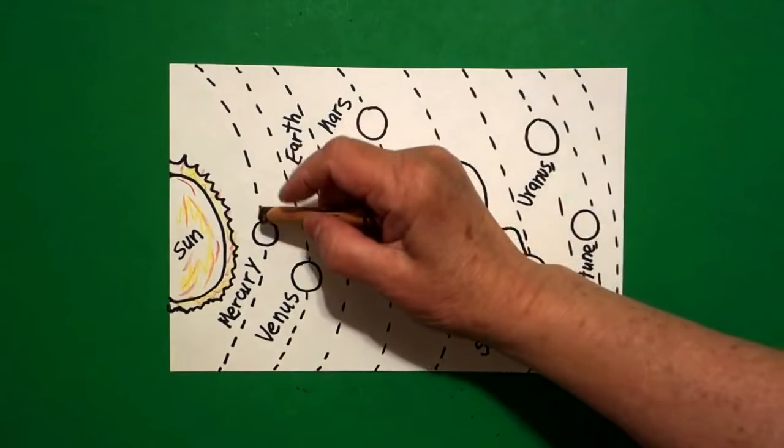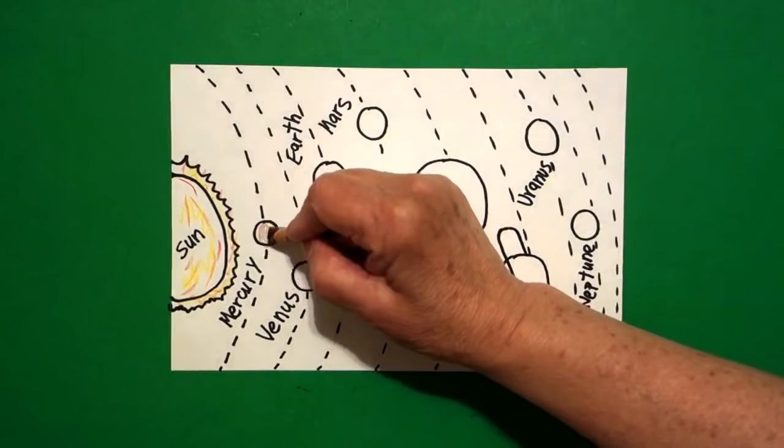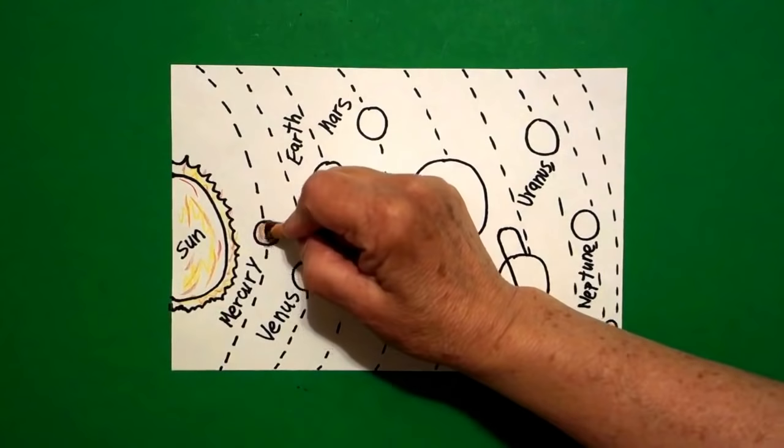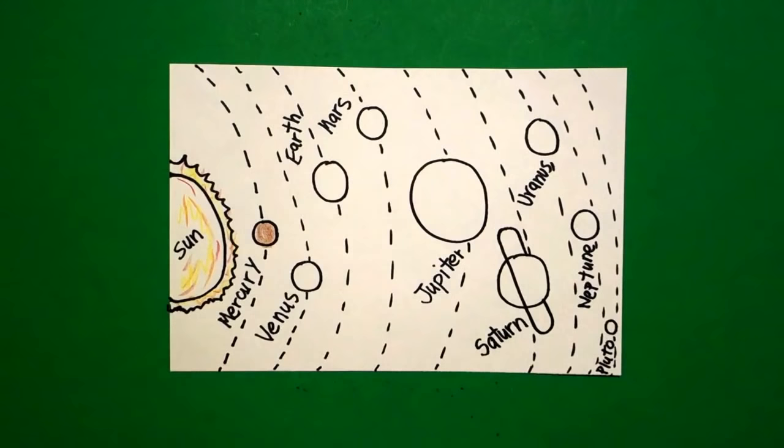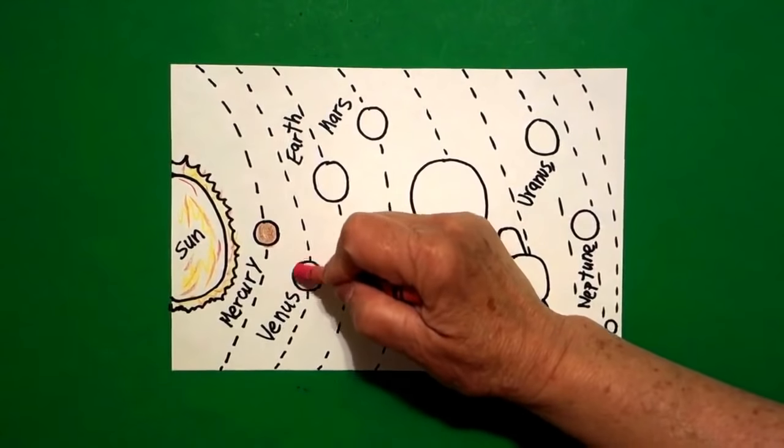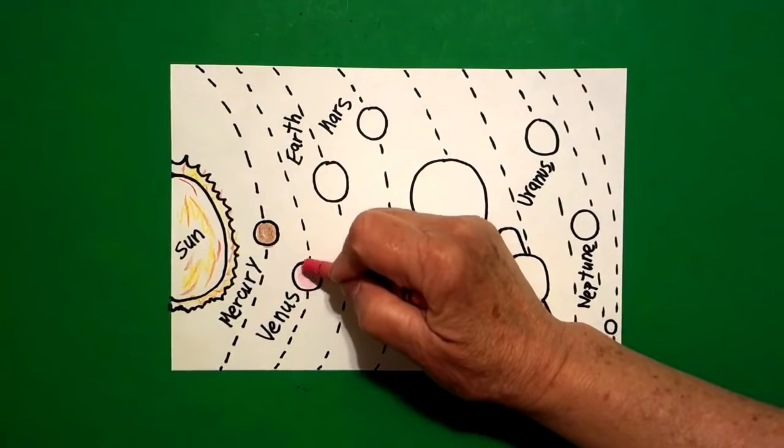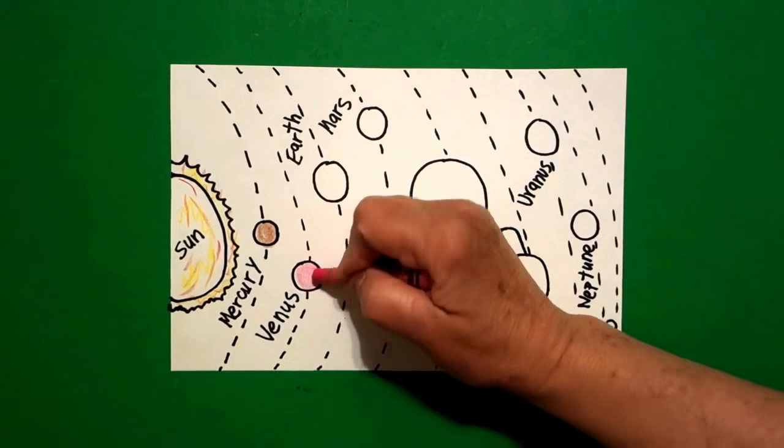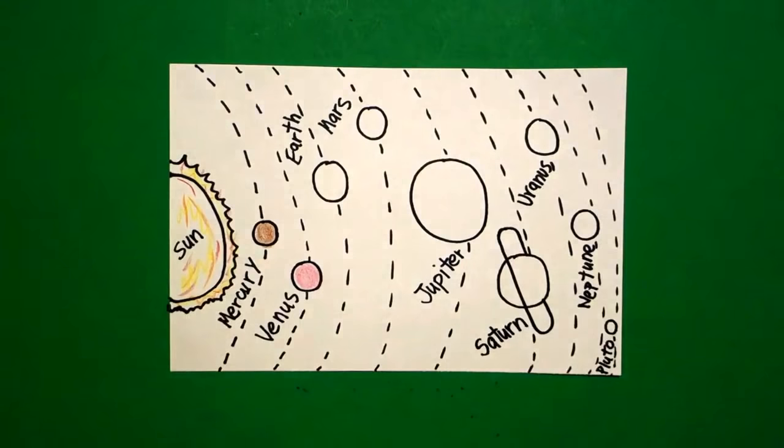Next, closest to it comes Mercury. And I'm just going to make this brown for no reason other than I found my brown and did it. And then next to that is Venus which I'm making pink only because Venus was the goddess of love. So I'm making that one pink.